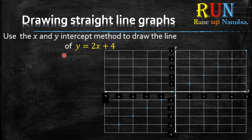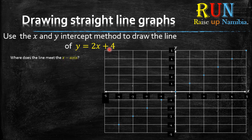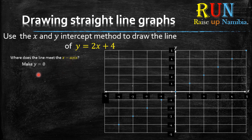Here we are told: use the x and y intercept method to draw the line y equals 2x plus 4. There are two questions you need to ask yourself to draw this line. The first question is: where does the straight line meet the x-axis? To find out, you will need to make y equal to zero.